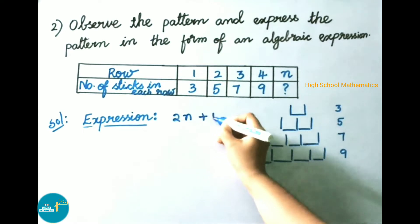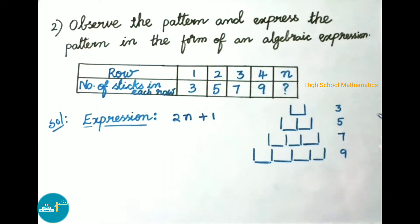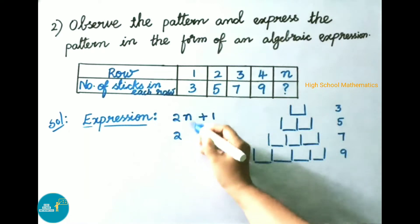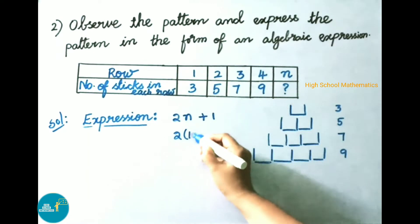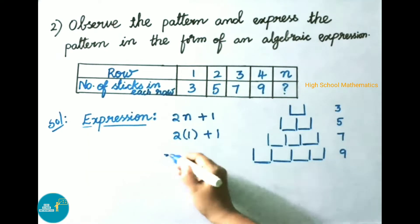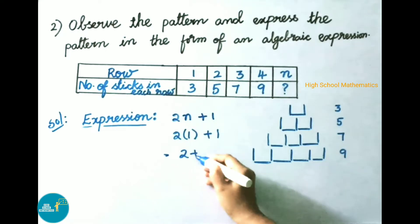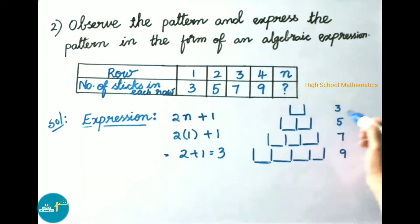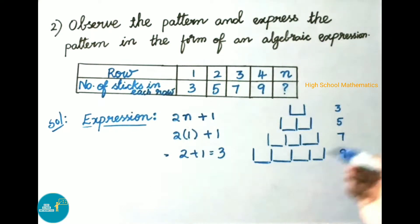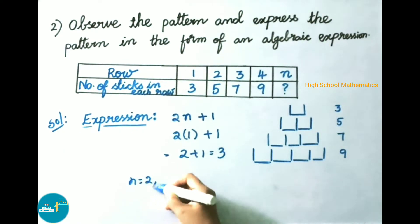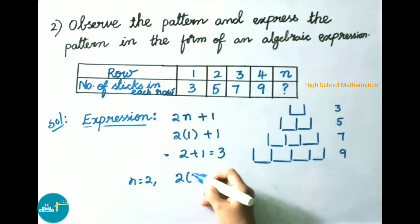Let's verify: for n equals 1, we get 2 times 1 plus 1 equals 3. So for the first row, 3 matchsticks are needed — correct. For n equals 2, we get 2 times 2 plus 1 equals 5 matchsticks.